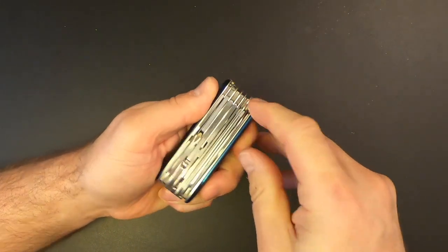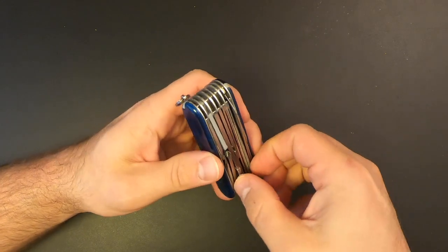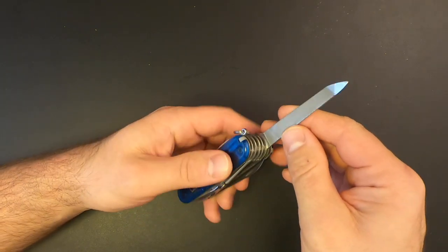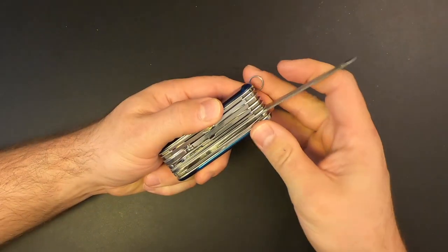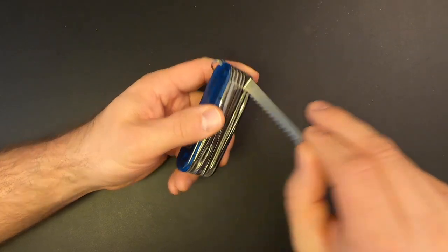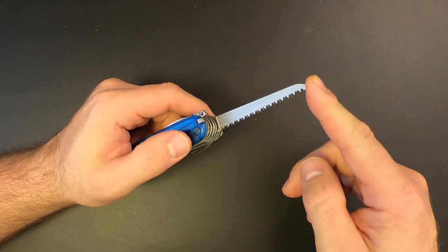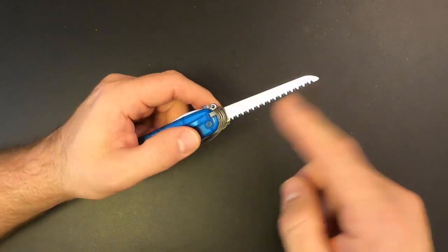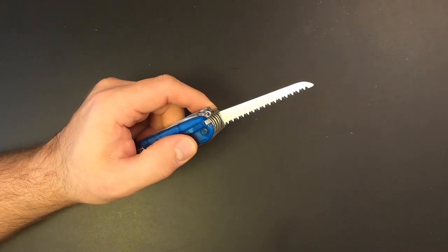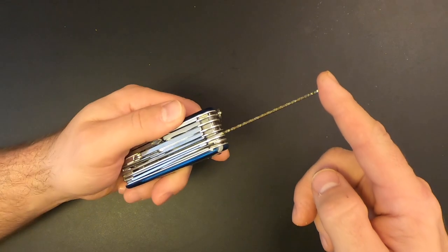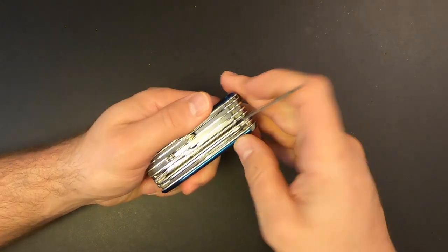And then next, we've got this file tool, which is four tools in one. It's a nail file and nail cleaner, and then a metal saw and a metal file. Then next to that, we've got the wood saw. And the Victorinox wood saw is actually very good. Excellent. In fact, now obviously, because of its size, you're not going to be sawing down a big tree. But for sawing small branches and or notch work, this does a fantastic job.